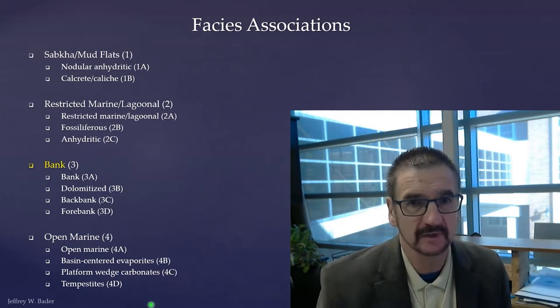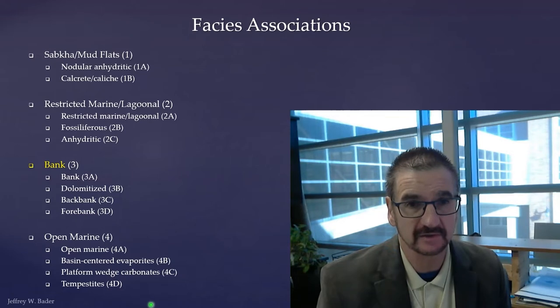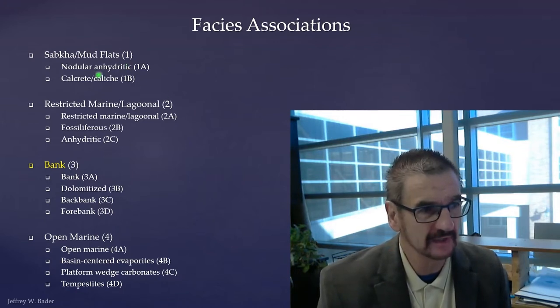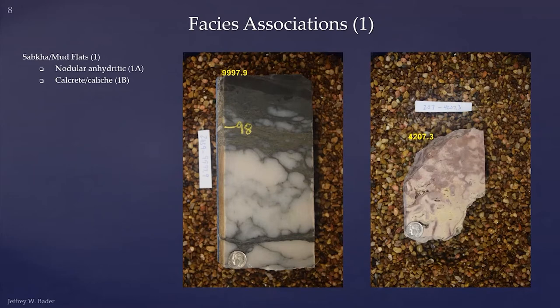I didn't look at that paper initially so as not to become biased, and once I got my information and interpretation down I looked and saw that it correlated nicely with their work. The environments were then subdivided into various facies we'll look at in detail in the core workshop. For sabkha facies, the main feature is nodular anhydrite, deposited sub-aerially in the upper supratidal environment. They may also occur distally as basin-center deposits, as we'll look at in the sequence stratigraphy section.